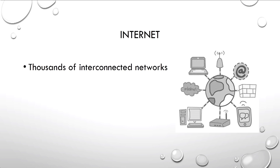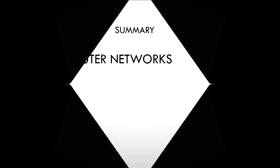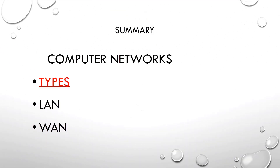Finally, internet — the whole globe is interconnected through thousands of different interconnected networks. Whatever device we use — laptop, desktop, computer, printer, or mobile — the global world is interconnected through the internet. That is why the internet is called a public network, which is not owned by any single organization.